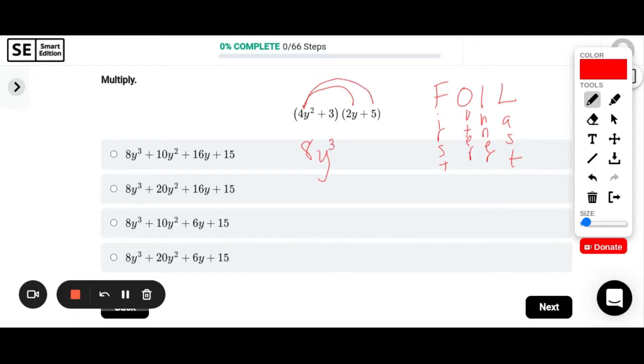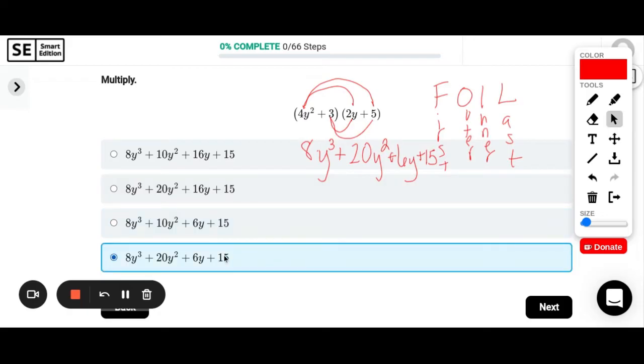And then inner: 3 times 2y. This would be 3 times 2 is 6, so 6y. And then 3 times 5 is 15. And then if I had anything to combine I could, but because all of my exponents are different that are attached to the y I cannot combine any terms. So it looks like there's our final answer.